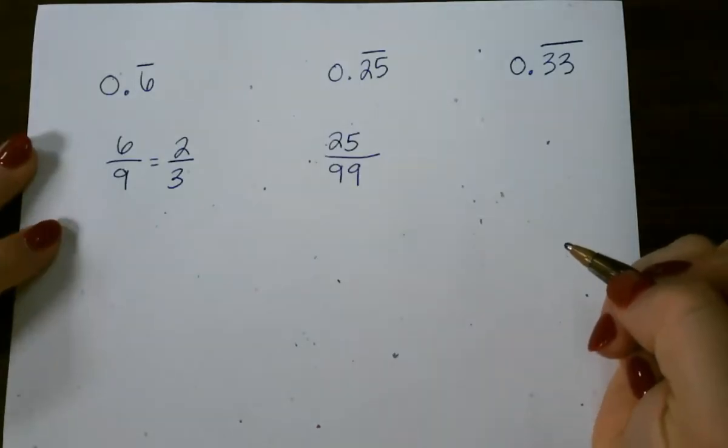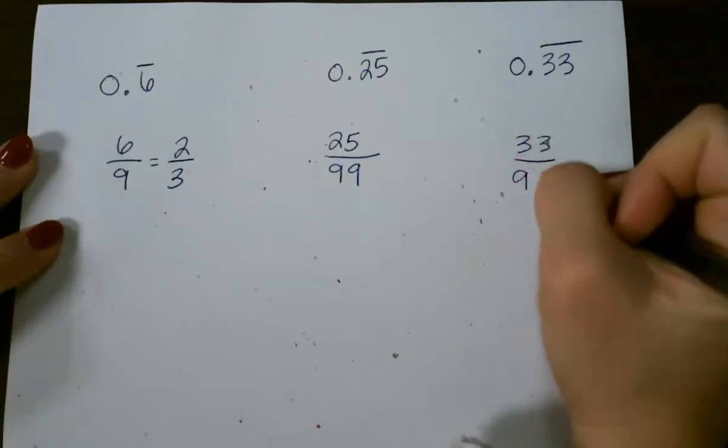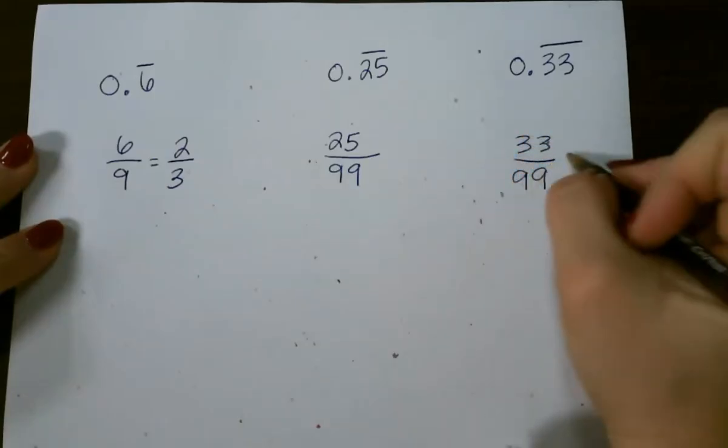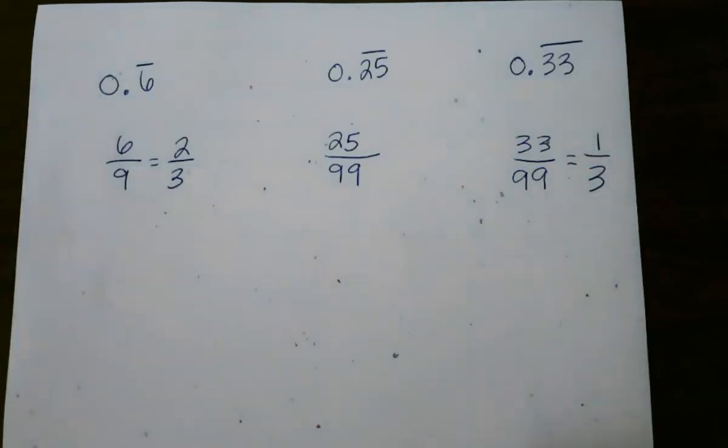And for our third one, 33 is the numerator, with 99 as the bottom, and that simplifies to 1 third. So let's go ahead and see what I'm telling you.